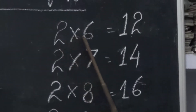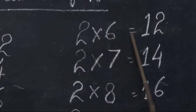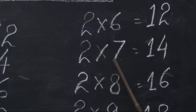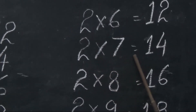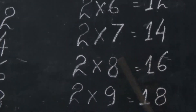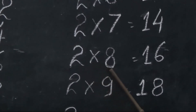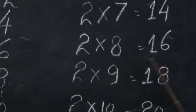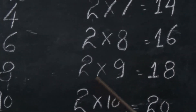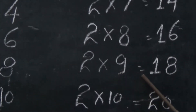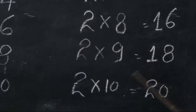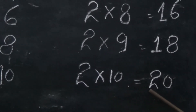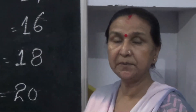Two, six, zah, twelve. Two, seven, zah, fourteen. Two, eight, zah, sixteen. Two, nine, zah, eighteen. Two, ten, zah, twenty. Thank you.